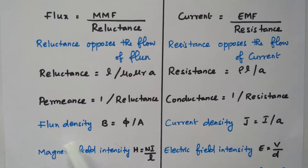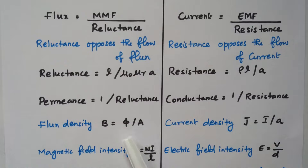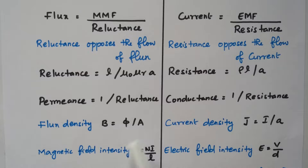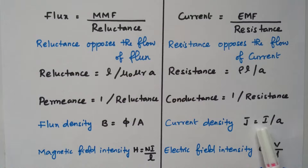Flux density is flux per unit area (B = Φ / A). Similarly, current density is current per unit area (J = I / A).